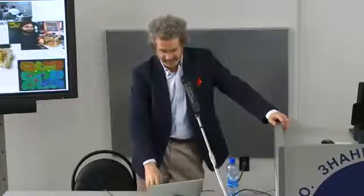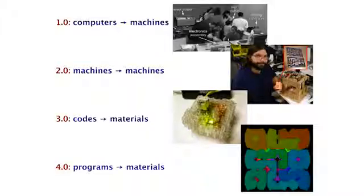What we're trying to do is not just have computers control tools, but actually put information into materials. We're progressing from computers running machines, to machines that make machines, to putting codes in materials, to putting programs into materials. To explain the background to Fab Labs, I'm going to tell a little bit about each of these steps.